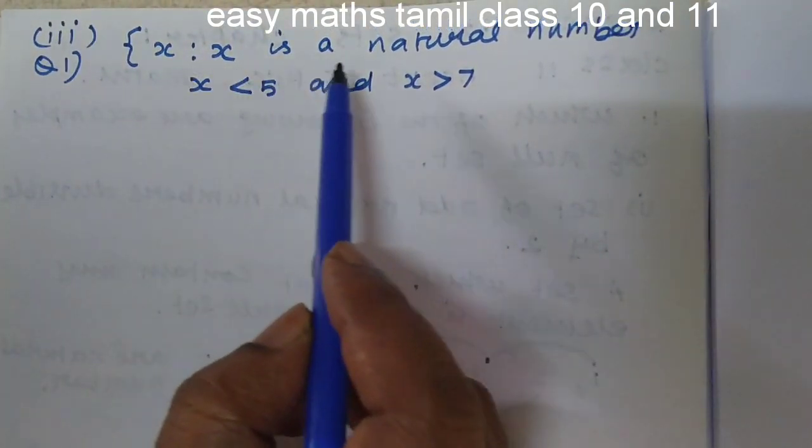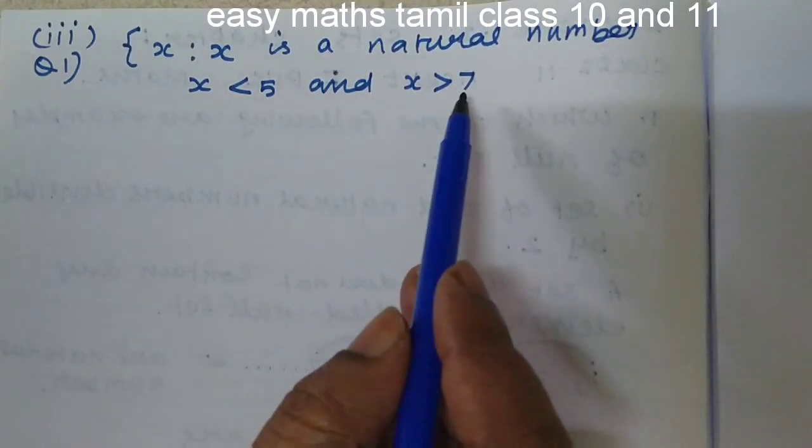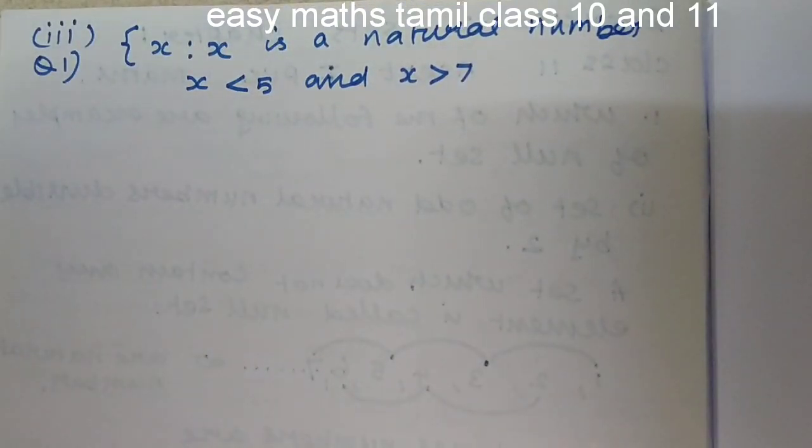X is a null set where X is a natural number, X less than 5 and X greater than 7. There is no natural number less than 5 and greater than 7. So this set does not contain any element. So it is a null set.